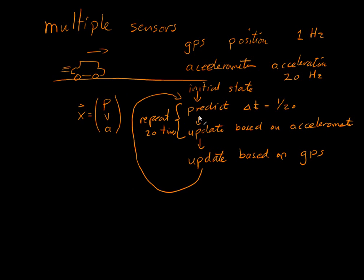In that way, we have made 20 predictions, where we have moved the system forward in time. And for each of these steps forward in time, we have updated the accelerometer data of the acceleration part of the model here.